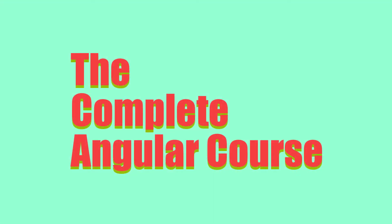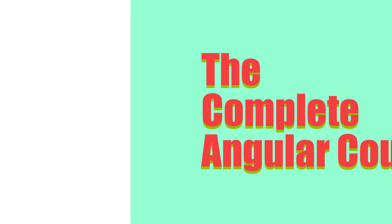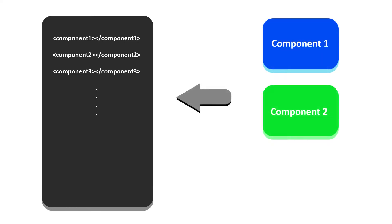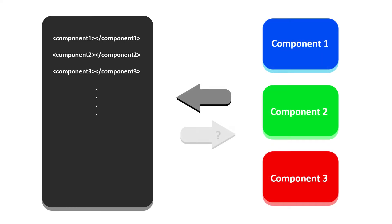Hello, welcome to another video of the complete Angular course. In this video I'll be talking about interactions with components using inputs and outputs. One of the major advantages of building applications using Angular is the ability to divide our application into tiny modules called components. But how can we control the behavior of the component from the outside? And how can we react to the changes made by the component? We need a way to insert and extract information from our components so we can interact with them.